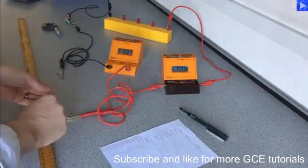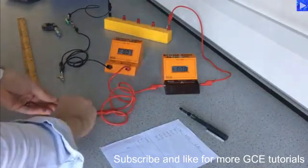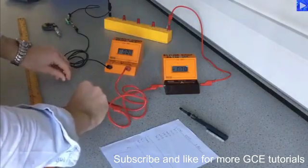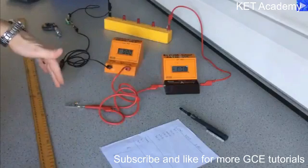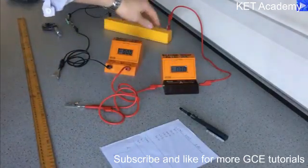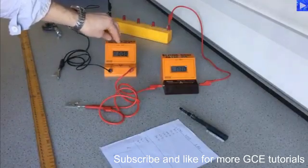Then I will measure out different lengths of the wire. I will use these crocodile clips to clip on to give me that length. I will pass the current through that length, measure the current with an ammeter, and measure the voltage across it with this voltmeter.